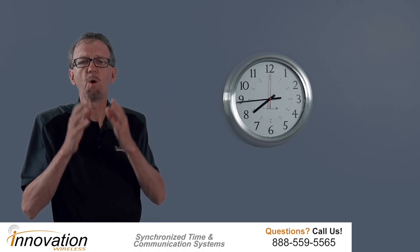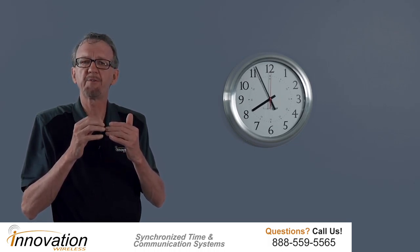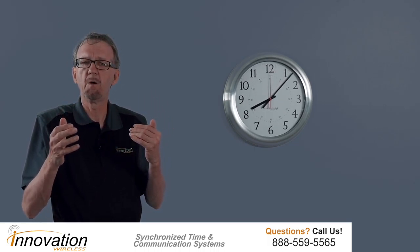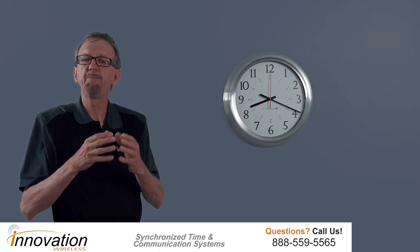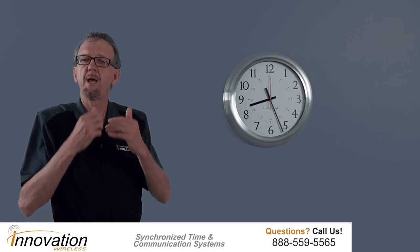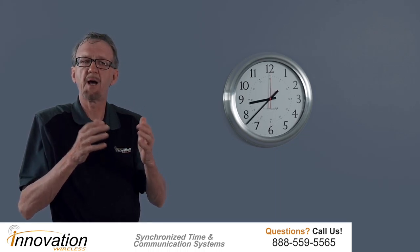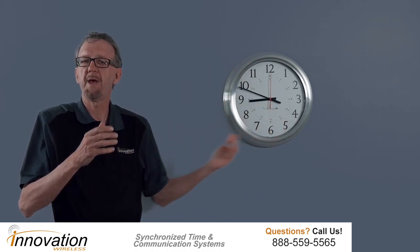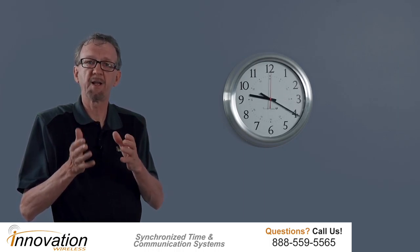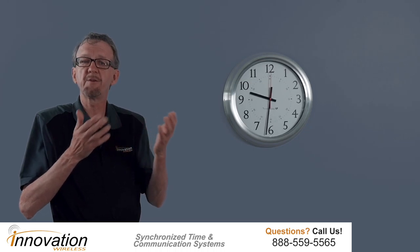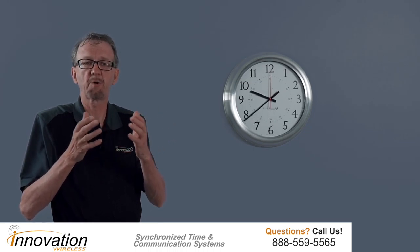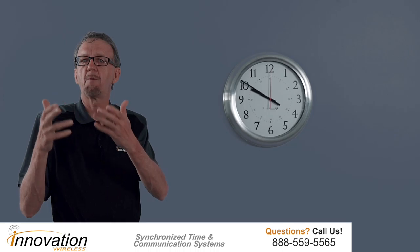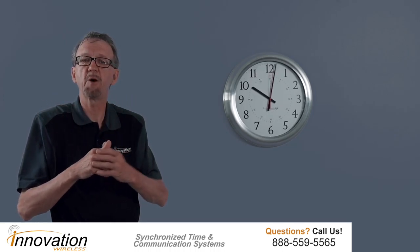It also will automatically adjust for daylight savings time in both the spring and in the fall. So in the spring, on that Sunday at 2 in the morning, it will change the time to daylight savings time, and then all your clocks, when they open up their receiver, will adjust to the daylight savings time. Then in the fall, when we go off of daylight savings time back to standard time, the same procedure. Sunday, 2 o'clock, clock opens up, the transmitter automatically adjusts for daylight savings time for your time zone, and will take it to standard time.